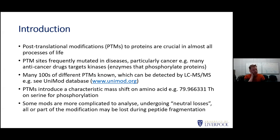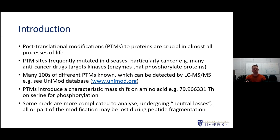PTMs are chemical changes which can happen to proteins, and they are embedded and important in almost all processes of life. Particularly in cell signaling, how cells make rapid changes to responses is governed largely through PTMs. If you want to make new gene expression and produce new proteins, that's relatively slow. So if a cell wants to do something quickly, you do that with a reversible modification — a protein gains a phosphorylation site, that changes its function, and you can pass the signal very quickly.